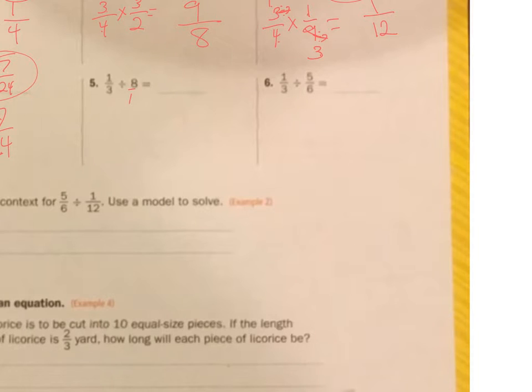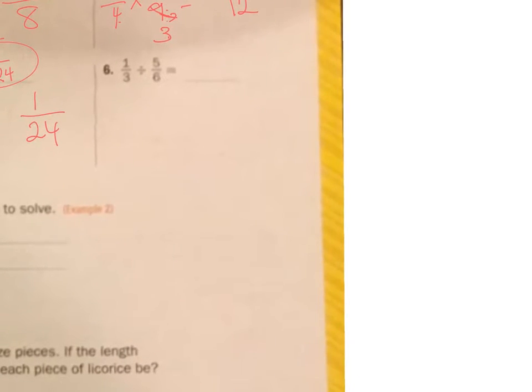Now, make that into a fraction. Keep that, change the sign, and the reciprocal change that. 1 over 8. Okay. 1 times 1 is 1, 8 times 3 is 24. My answer is 1/24. Kind of cruising along with these. Hopefully you're seeing how I'm doing this and it makes sense to you.